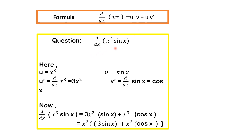The question given is d/dx(x³ sin x). As you can see, x³ is one function and sin x is the second function. So we take u = x³ as the first function and v = sin x as the second function. Let us find u'. The derivative of u is d/dx(x³). Applying the power rule, the power comes in front: 3x², with the power subtracted by 1 giving 2. So u' = 3x².